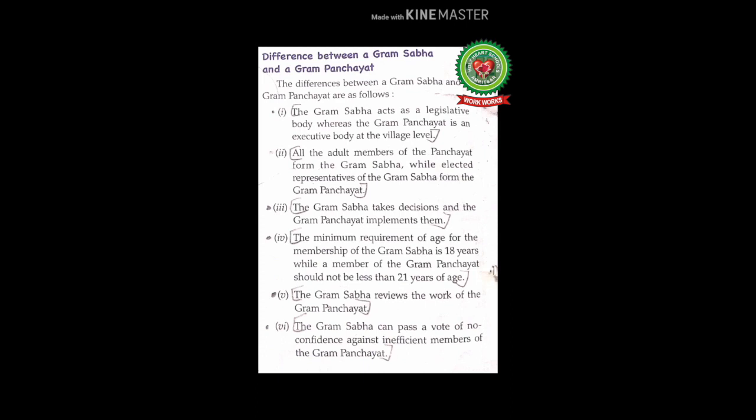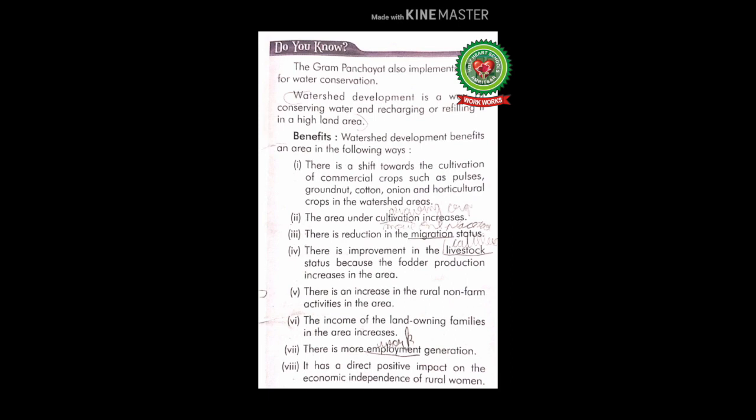Number six: the Gram Sabha can pass a vote of no confidence against inefficient members of the Gram Panchayat. We read this earlier in the functions of the Gram Sabha — the Gram Sabha can pass a vote of no confidence against any member of the Gram Panchayat if it is dissatisfied with the work of that member. These are the differences between a Gram Sabha and a Gram Panchayat. Now let's read the 'Do You Know' box of this lesson at page 109.